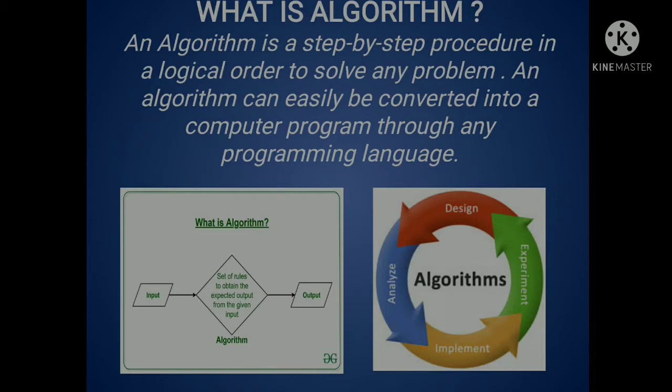An algorithm and flowchart helps to create a computer program in a step by step manner. As you can see in your diagram, algorithm goes in four steps. First, you have to implement it. Then you have to do the experiment. Then you can design and analyze your problem and solve it with the following steps.